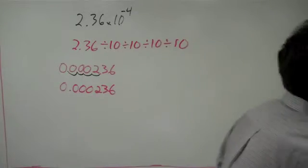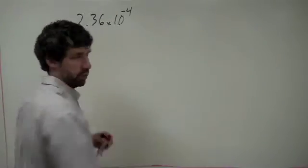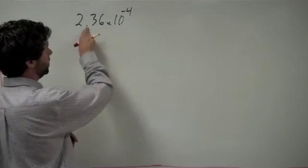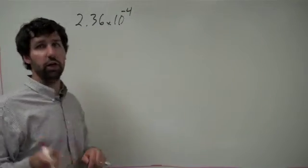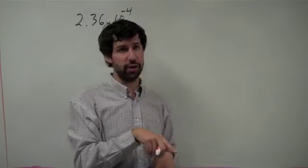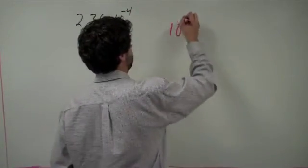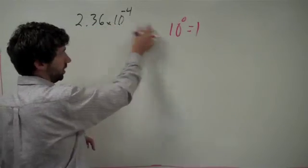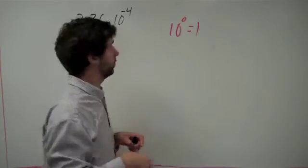That's converting from scientific notation into normal decimal notation. We can use the same trick from before. The trick is: whatever way the decimal place goes, the exponent goes the opposite, and vice versa. When we want to get to standard decimal notation, we want the exponent to be 0, because 10 to the 0 equals 1. If our power of 10 equals 1, we're in standard decimal notation.